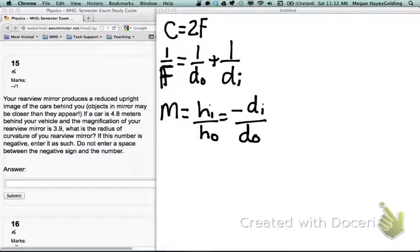So first we start to find the image distance using the magnification equation. Once we know the image distance, we substitute it into the lens equation to find the focal length. Then we substitute it into the radius of curvature equation to find the radius of curvature.